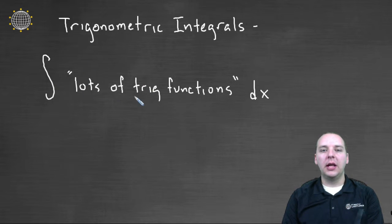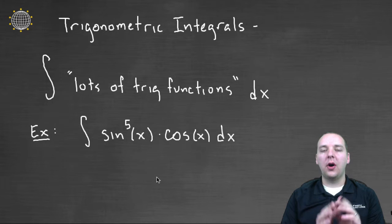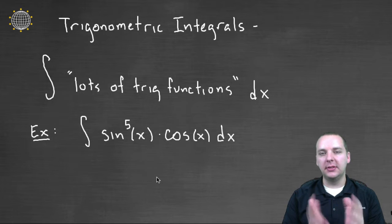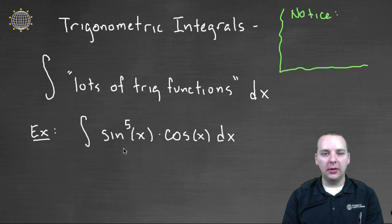So if we have an integral with lots of trig functions, such as this one, like the integral of sine to the fifth power of x times cosine of x dx, here's the general thought process of what we're going to try to do. And then we'll adapt this to specific situations when the time comes. We're going to notice that often times one of these guys will be the derivative of the other term, especially when you have lots of trig functions.